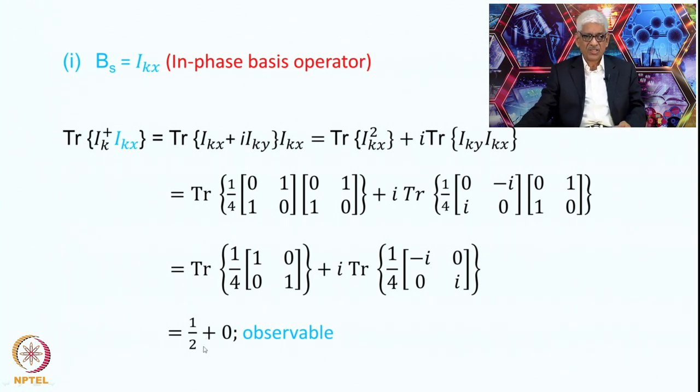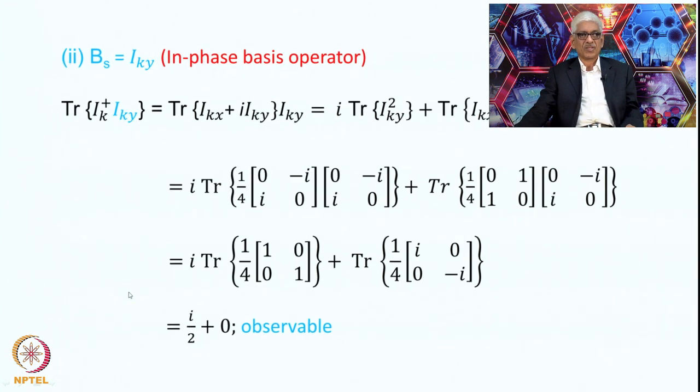So the result is non-zero, therefore this is observable because the trace is non-zero. Therefore this basis operator is observable.